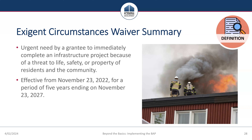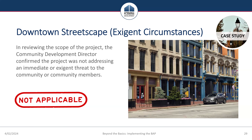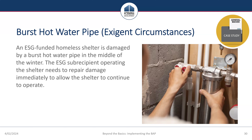The Exigent Circumstances Waiver is for projects that must be completed immediately to protect life, ensure safety, or prevent the destruction of property. This waiver is effective from November 23, 2022, for a period of five years ending November 23, 2027. Springfield's streetscape improvement project does not have an immediate or exigent threat, so this waiver would not apply. A good example where it would apply is if an ESG-funded homeless shelter is damaged by a burst hot water pipe in the middle of winter — because of the immediate threat to residents, the ESG subrecipient needs to repair the damage immediately to allow the shelter to continue operating.